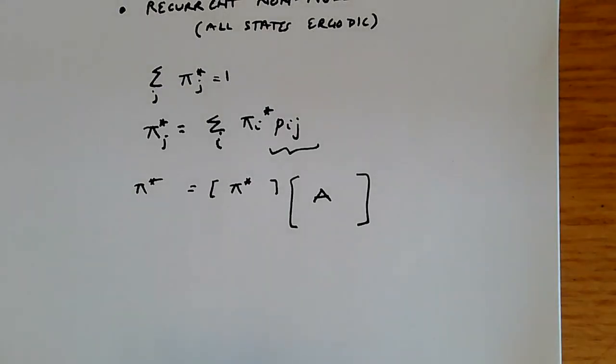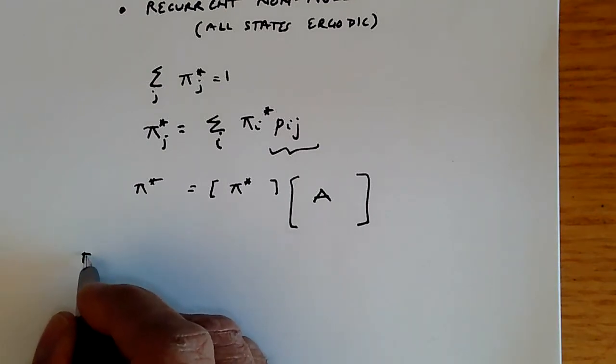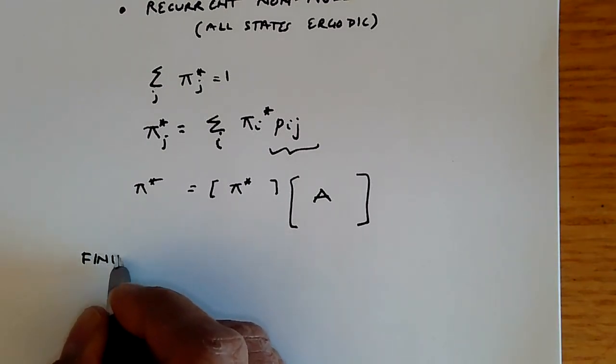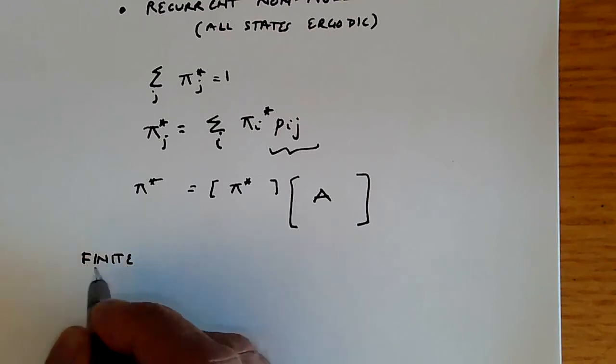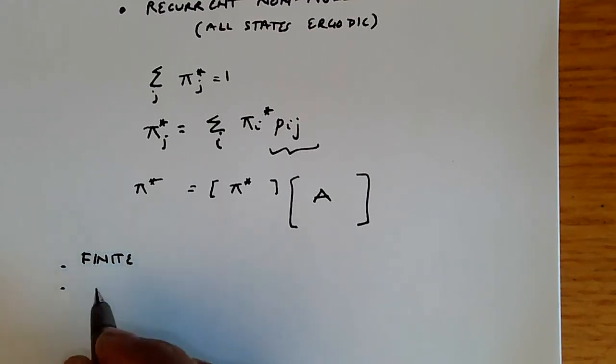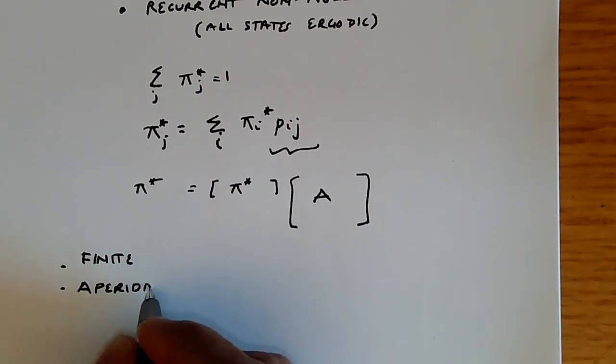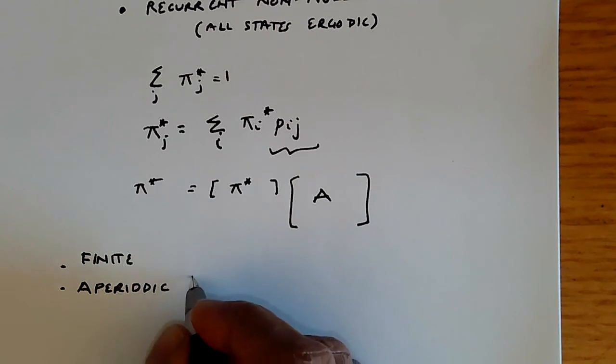Computing the stationary probability is quite easy when we have a finite chain, because if it's a finite chain, then all we need to do is to test for aperiodicity, which means a self-loop. So a self-loop.